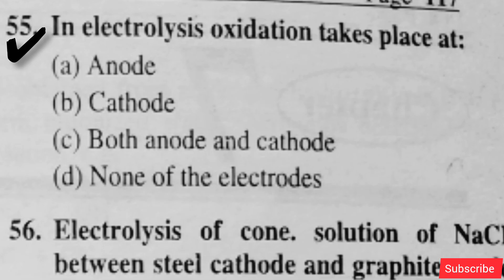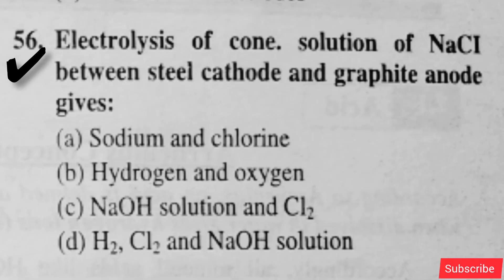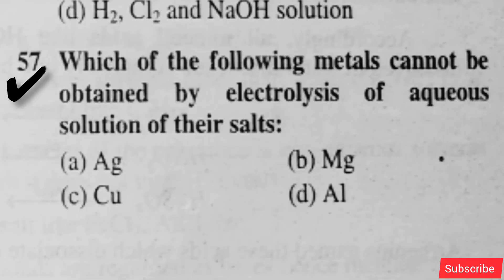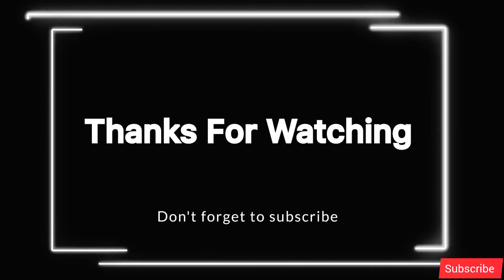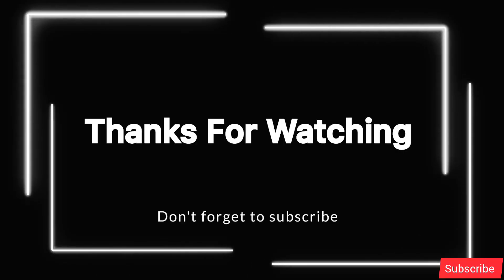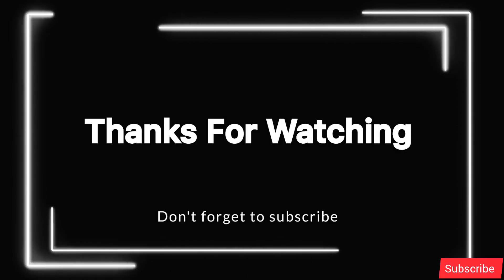In electrolysis, oxidation takes place at anode — option A is right. Electrolysis of concentrated solution of NaCl between steel cathode and graphite anode gives — option D is correct. Which of the following metals can be obtained by electrolysis of aqueous solution of their salts — option B is right. If the video was helpful, don't forget to subscribe to my channel. See you in the next video.